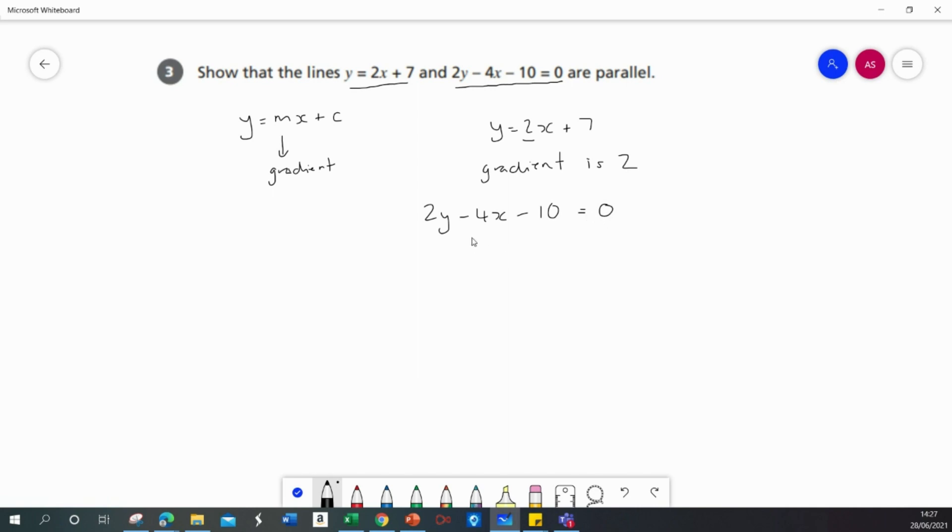So first of all I'm going to add 4x to both sides. That will leave me with 2y minus 10 equals 4x. Secondly add 10 to both sides of the equation, which gives me 2y equals 4x plus 10.